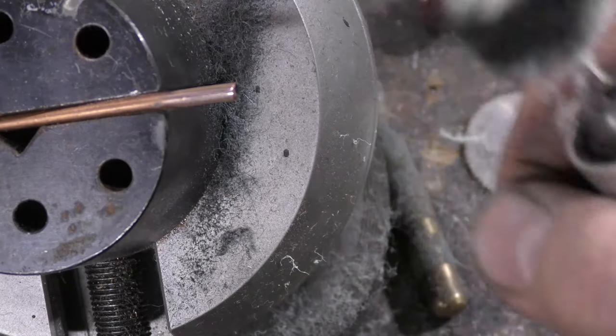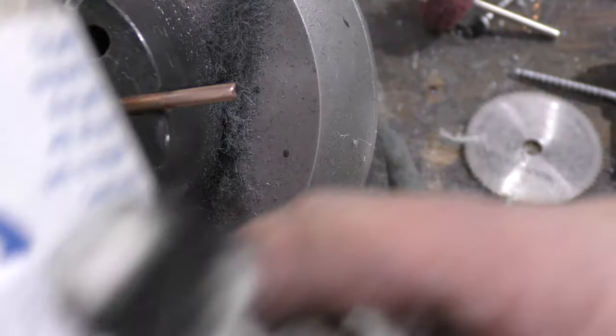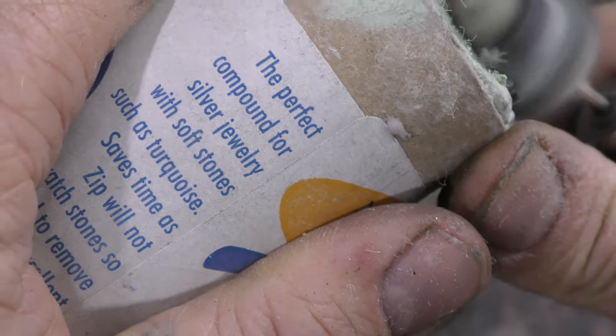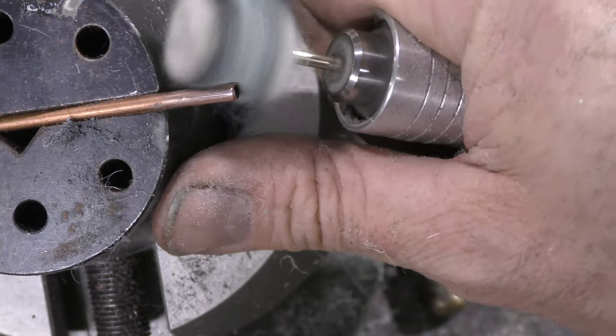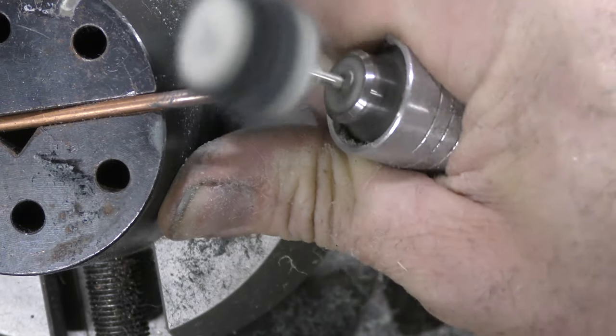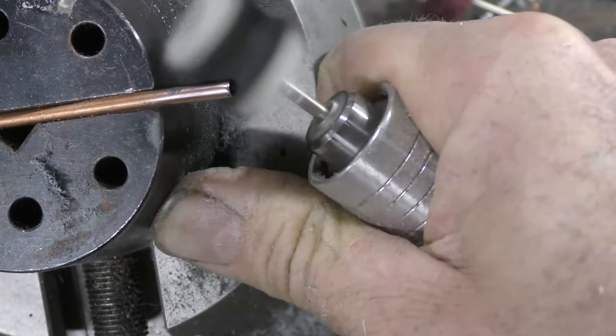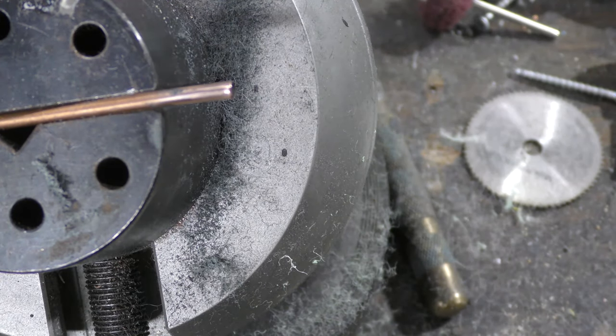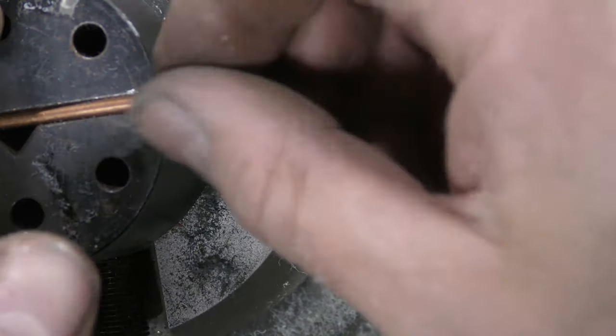That was Zip by the way, Zip buffing compound. This stuff is so amazing. You can use that stuff from Harbor Freight though if you wanted to. That red rouge, that works really good for copper too.